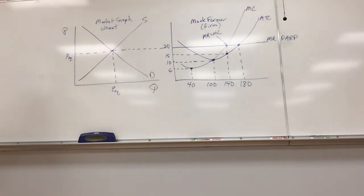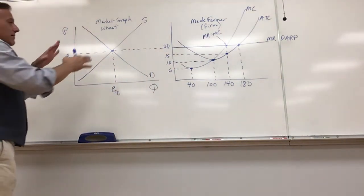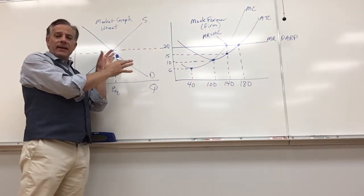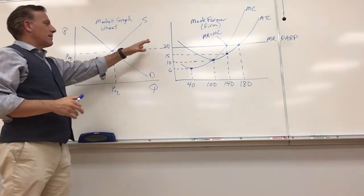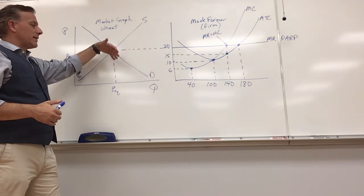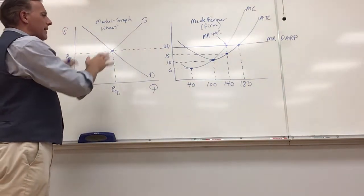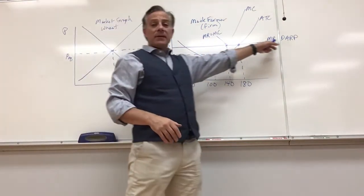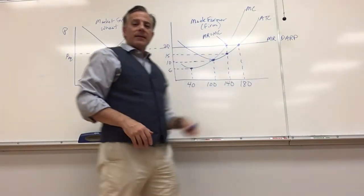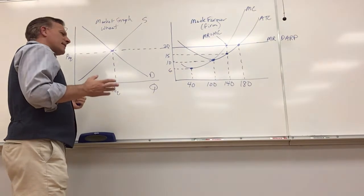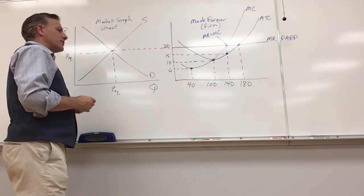The firm is a price taker because they accept the price from the market. Supply and demand shifts can take place here, like an increase in demand for wheat or decrease in demand for wheat as people became gluten-free or something like that. We got our price that sets our Mr. Darp right here.